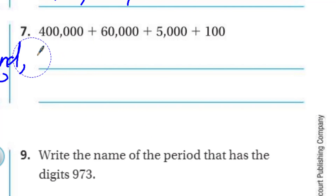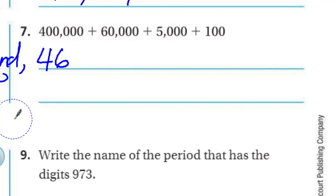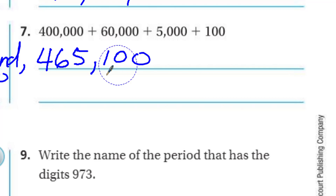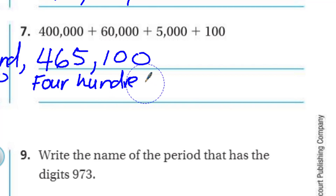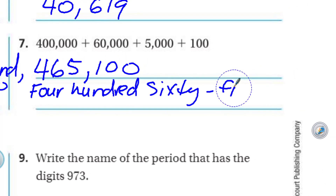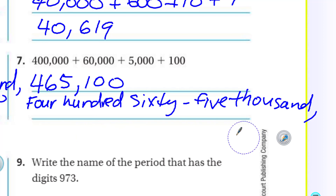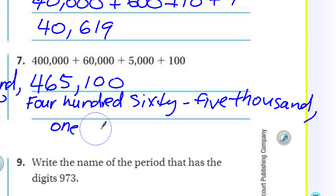Number seven is given in expanded form: 400,000 + 60,000 + 5,000 + 100. Standard form: 465,100. Word form: four hundred sixty-five thousand — with a hyphen on sixty-five — one hundred.